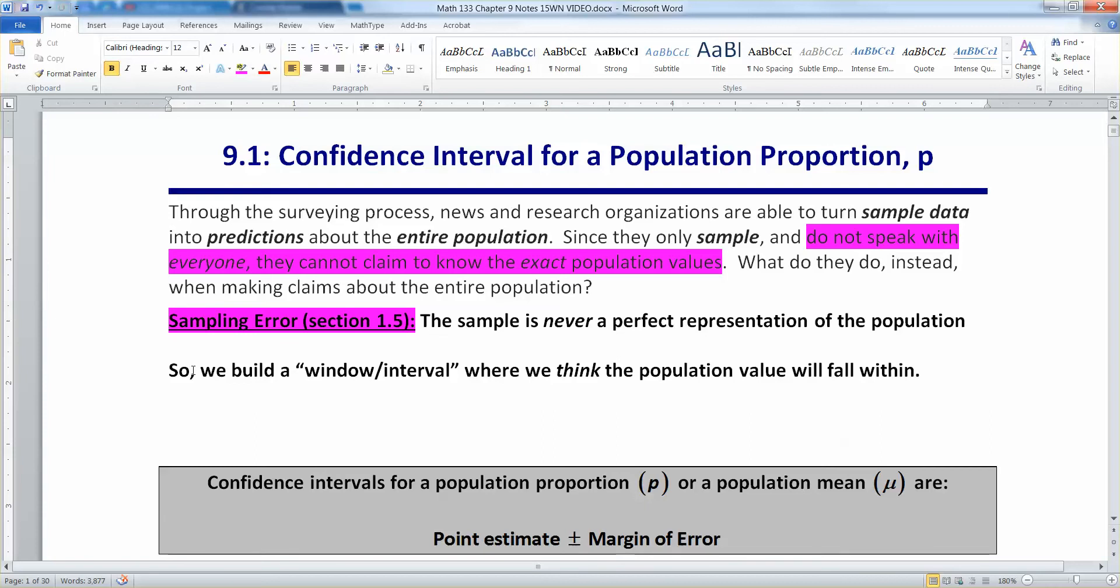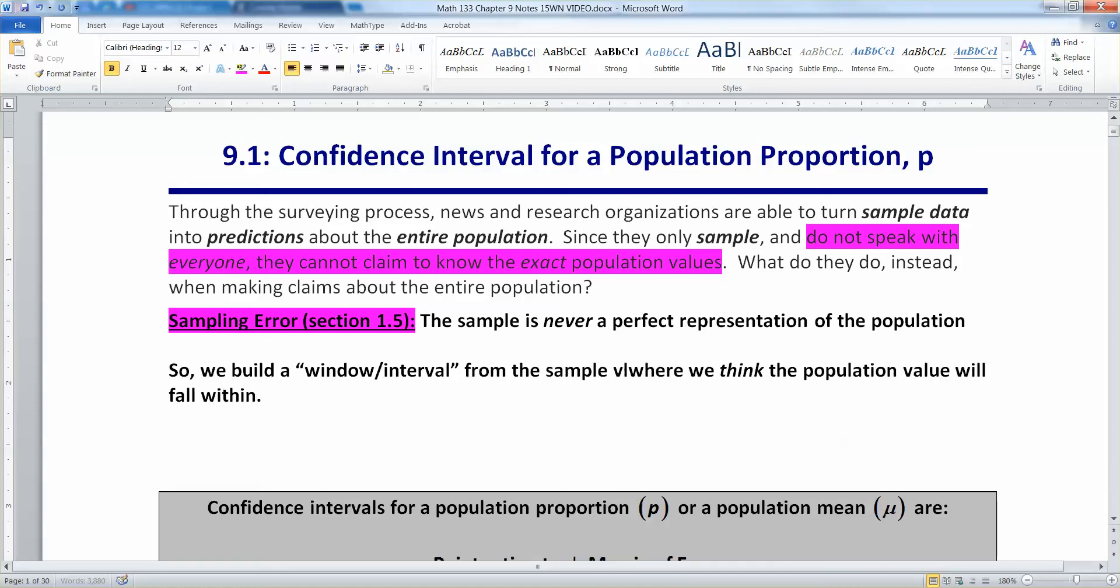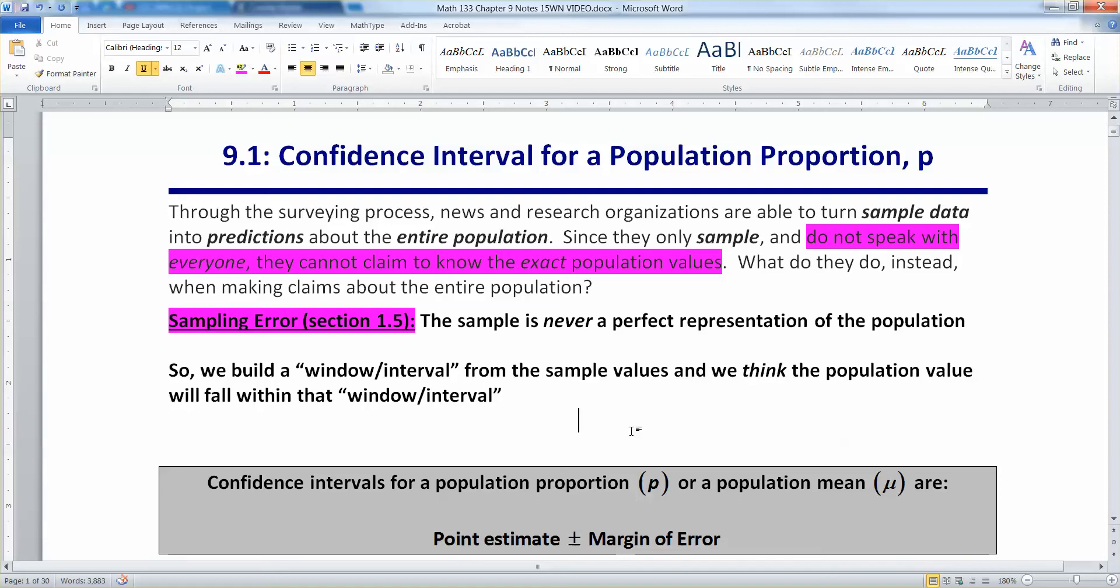So we instead think, well, I'll take my sample values and I'll build an interval. So build a window slash interval from sample values where we think that the population value will fall within.